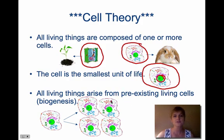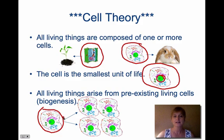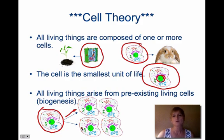And then the third thing is that all living things arise from pre-existing living cells. So we would have one cell, and it would reproduce and create more cells. All new cells have to come from a pre-existing cell. This is a very basic idea, because we can think about this in terms of: every living animal has to have come from its parent.